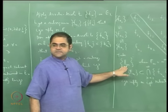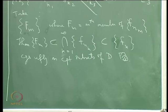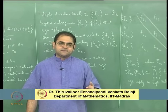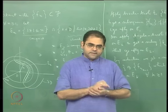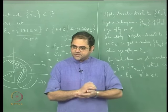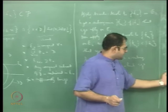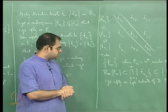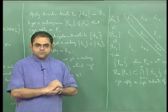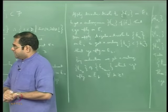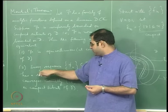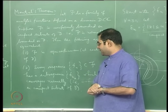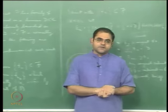This sequence of functions eventually converges uniformly on every compact subset of D — convergence is an eventual thing, it only needs to happen beyond a certain finite stage. Therefore you get a subsequence that converges uniformly on compact subsets of D. That gives the proof of 1 implies 2, where condition 1 is already always true. So we have proved condition 2 is always true, and that gives the proof of Montel's theorem.